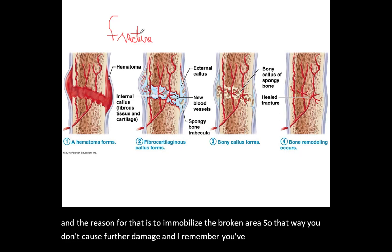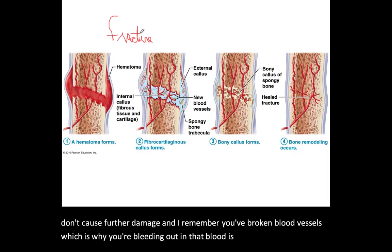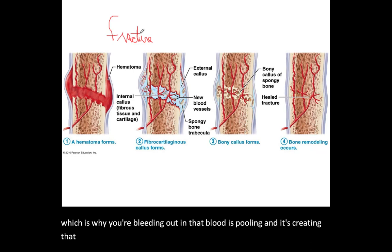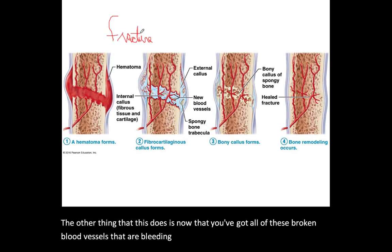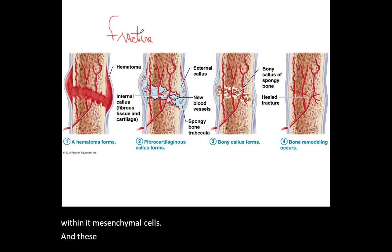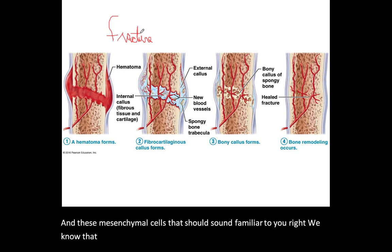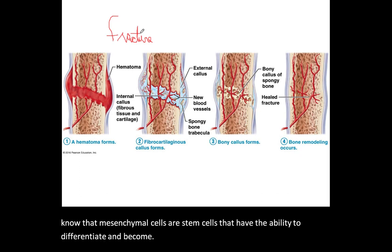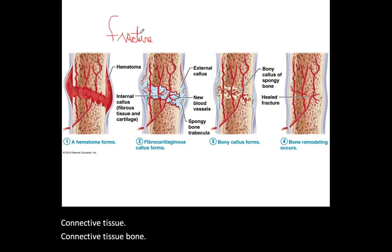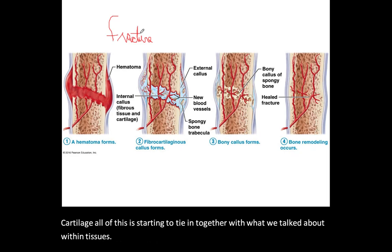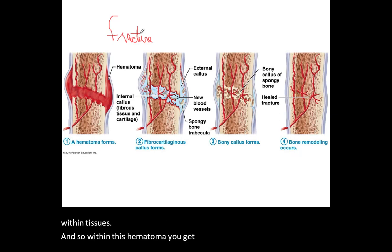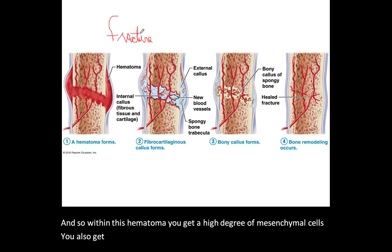You've broken blood vessels, which is why you're bleeding, and that blood pools creating the hematoma underneath the skin. The broken blood vessels also bring in mesenchymal cells — stem cells that have the ability to differentiate and become connective tissue, bone, or cartilage. All of this ties back to what we talked about within tissues.